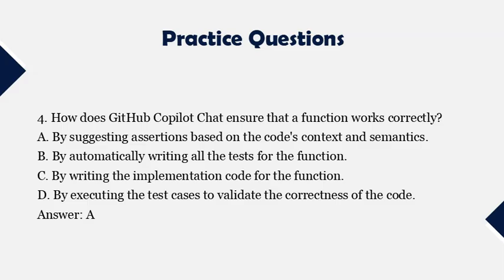Question 4: How does GitHub Copilot Chat ensure that a function works correctly? A. By suggesting assertions based on the code's context and semantics. B. By automatically writing all the tests for the function. C. By writing the implementation code for the function. D. By executing the test cases to validate the correctness of the code. Answer: A.